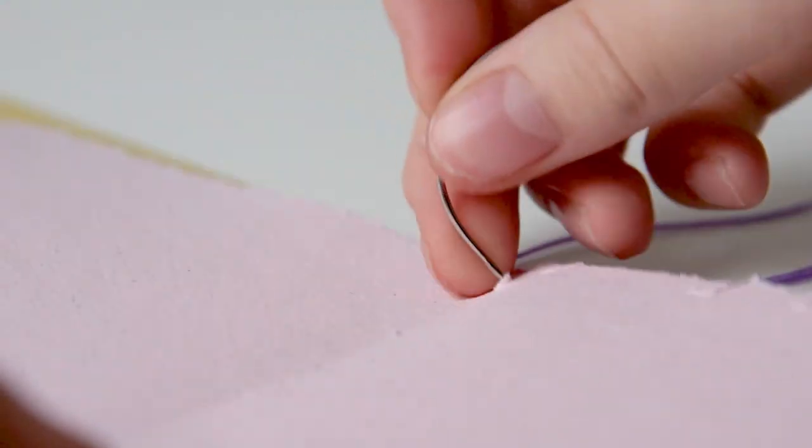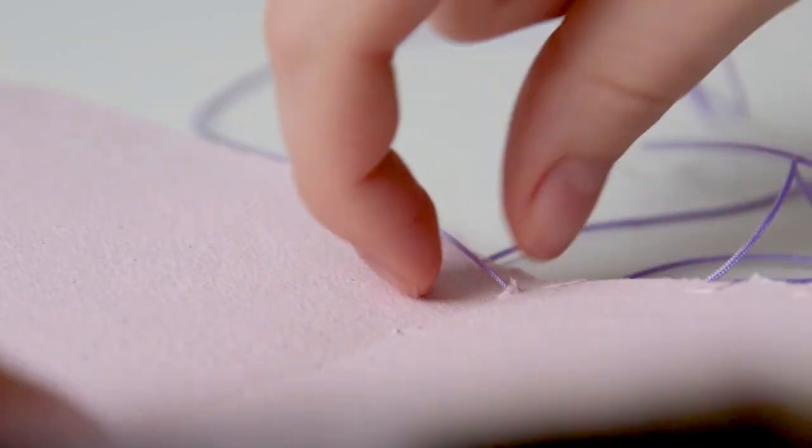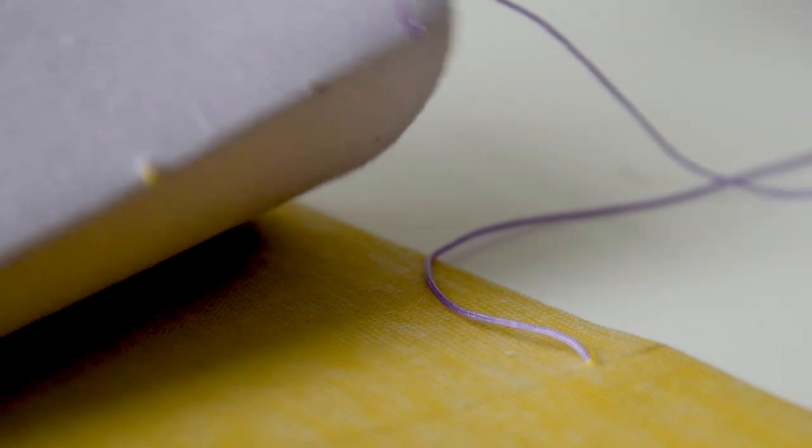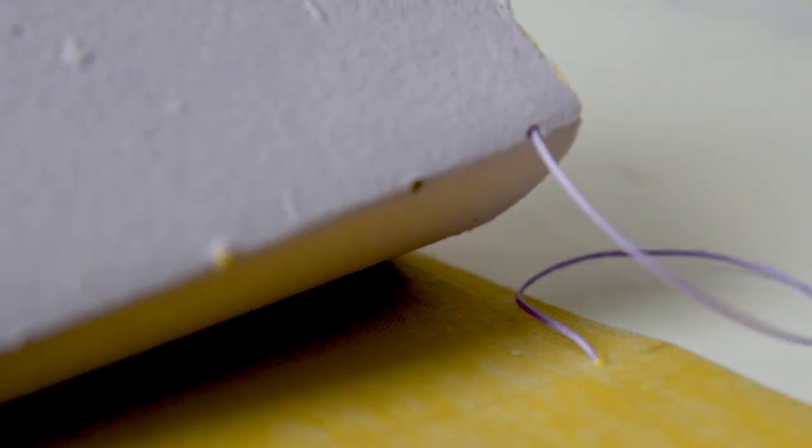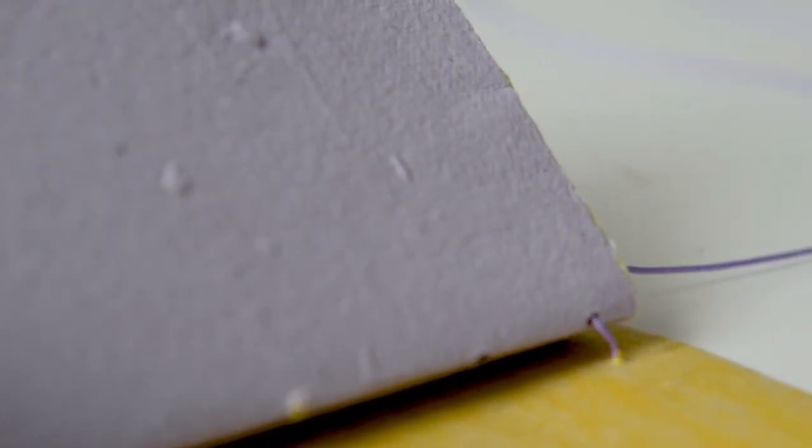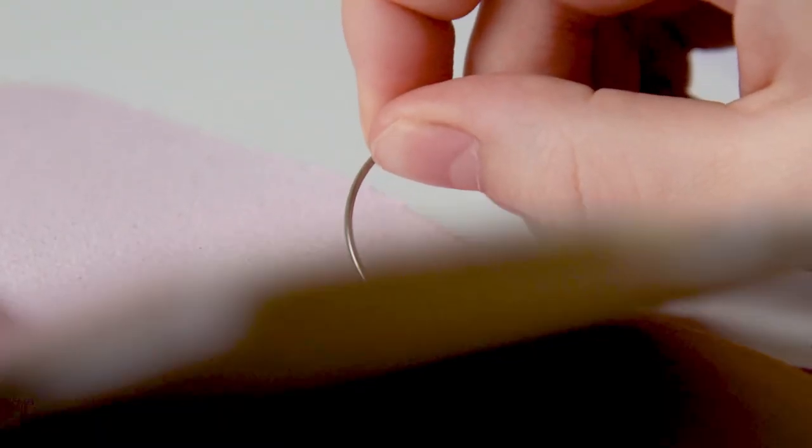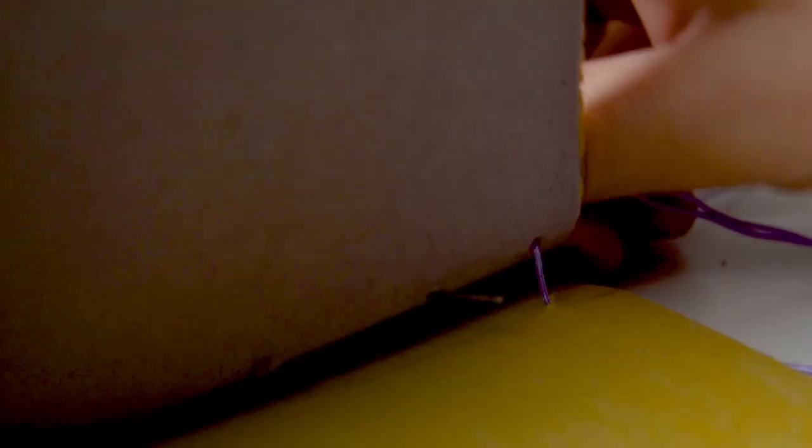Then go through the aligning hole, so the right one, of the signature and pull all the way through, making sure that the tail is still out there. Then go out through the second hole of the signature and then through the aligning hole in the leather, pulling it tight.